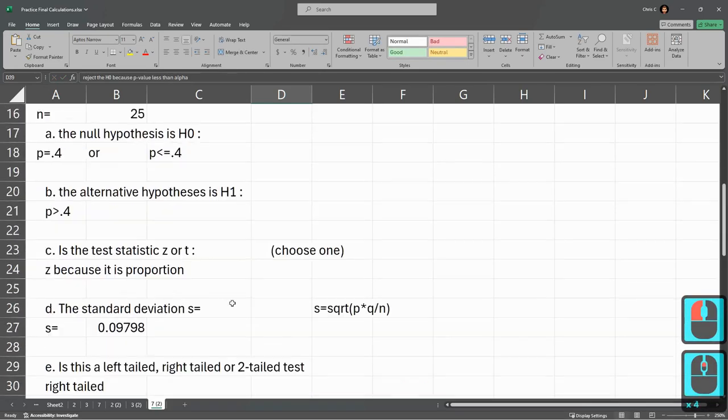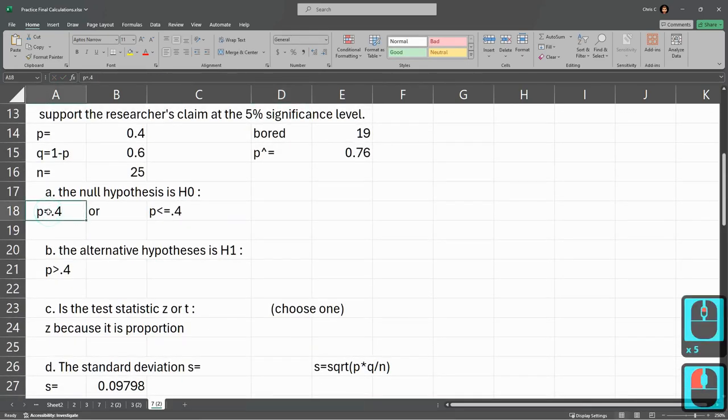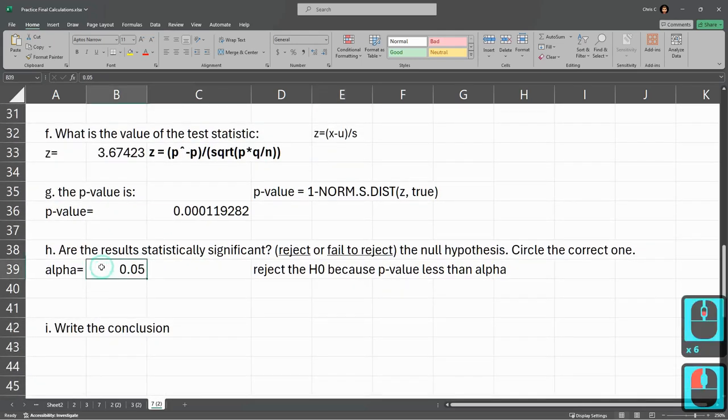So again, what was H0? H0 was that the actual proportion was 0.4, which was what it was believed to be originally. But remember, they did some research and found that in a new sample, it was way higher. So the idea is because this is so much higher than the original, it's very likely the original is not correct or things are different now. And that's exactly what we got here.